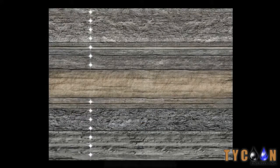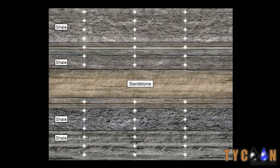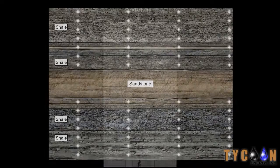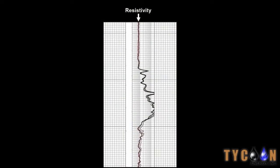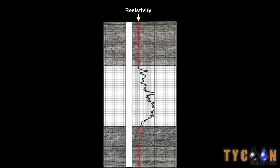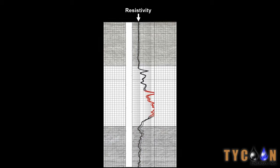Oil or gas-bearing rocks are less conductive and therefore more resistive to electrical currents. Notice that for most of the vertical distance, the rock has less resistivity. This is likely shale. The higher resistance is likely an indicator of sand, a layer that can hold hydrocarbons.